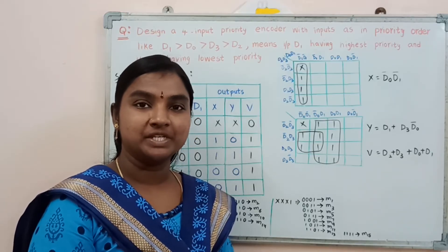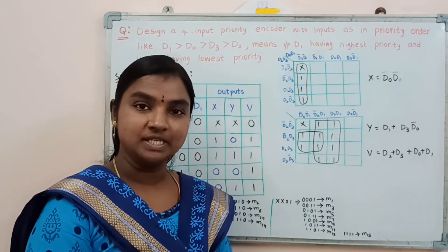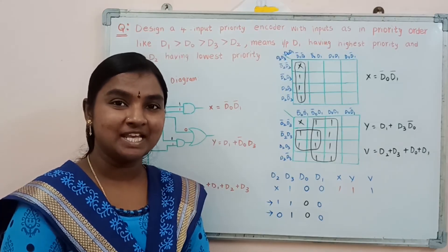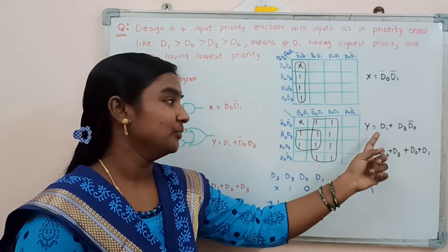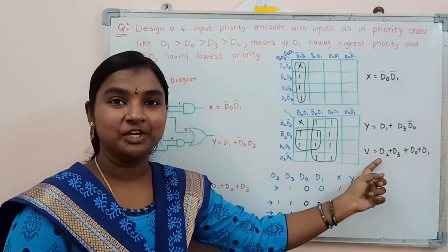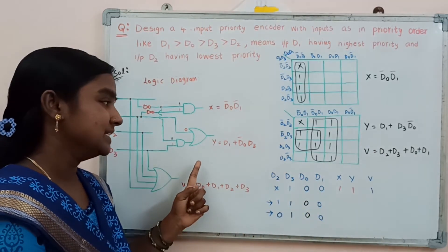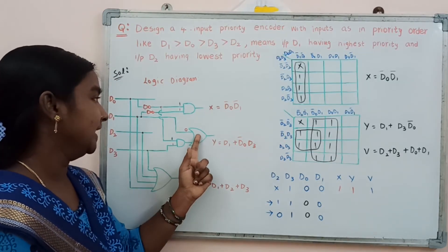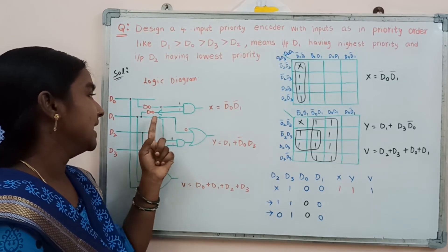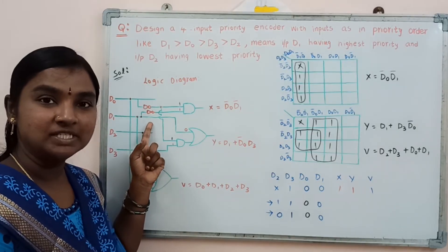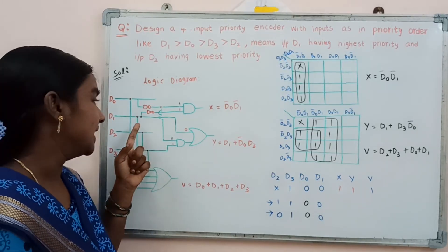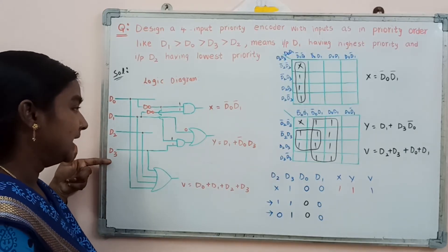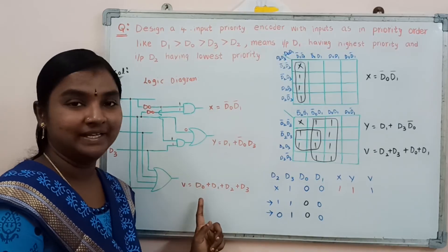Using these boolean expressions, we can draw the logic diagram. Using the boolean expressions for outputs x, y, and v, we draw the logic diagram using 1 or 2 OR gates, 2 AND gates, and 2 NOT gates. In this logic diagram, the inputs are d0, d1, d2, d3 and the outputs are x, y, and v.